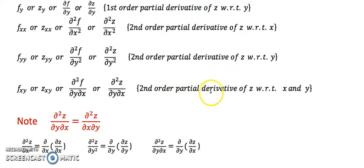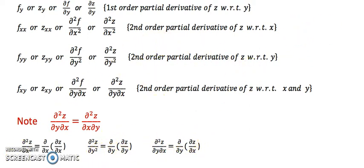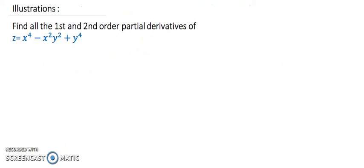With an example, we'll see whether you differentiate x first then y, or y first then x — the answer will be the same for the mixed second derivative. Let's look at an illustration where we find all first and second order partial derivatives. We have z = x⁴ − x²y² + y⁴, and we need to find all first and second order partial derivatives.